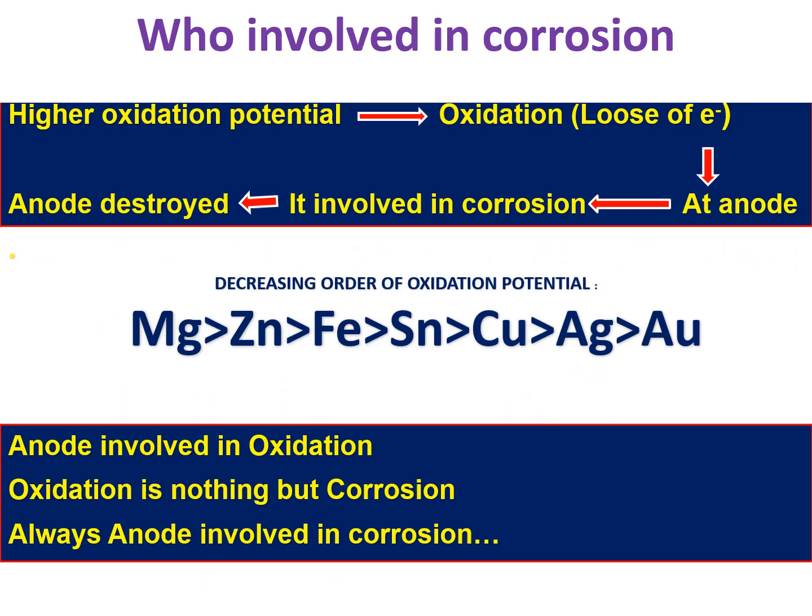First of all, who is involved in corrosion? We already learned in previous sessions that the metal having a higher oxidation potential is obviously involved in the oxidation reaction. Oxidation is nothing but the loss of electrons. The metal that loses electrons acts as the anode; at the anode, oxidation takes place, and that metal is involved in corrosion and finally gets destroyed. If you observe the decreasing order of oxidation potential: magnesium has higher oxidation potential than zinc, zinc has higher than iron, and silver has higher than gold — gold has the least oxidation potential among the shown metals.